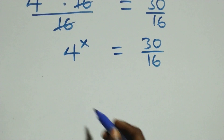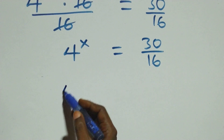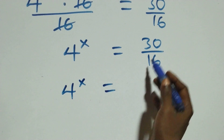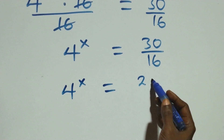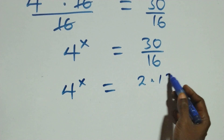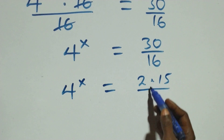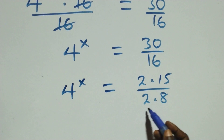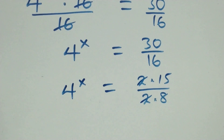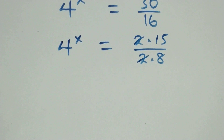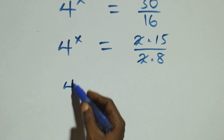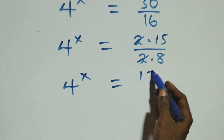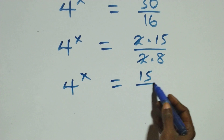The next step: four raised to power x equals thirty over sixteen, which can be written as two times fifteen over two times eight. The twos cancel each other, so we are left with four raised to power x equals fifteen over eight.